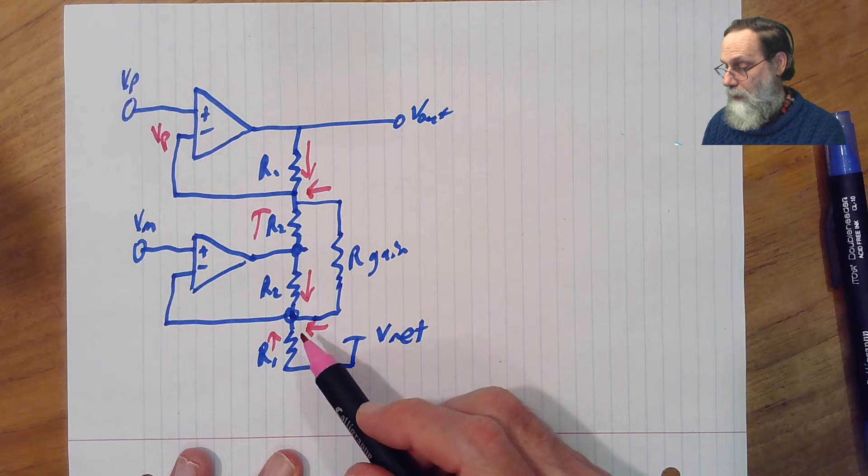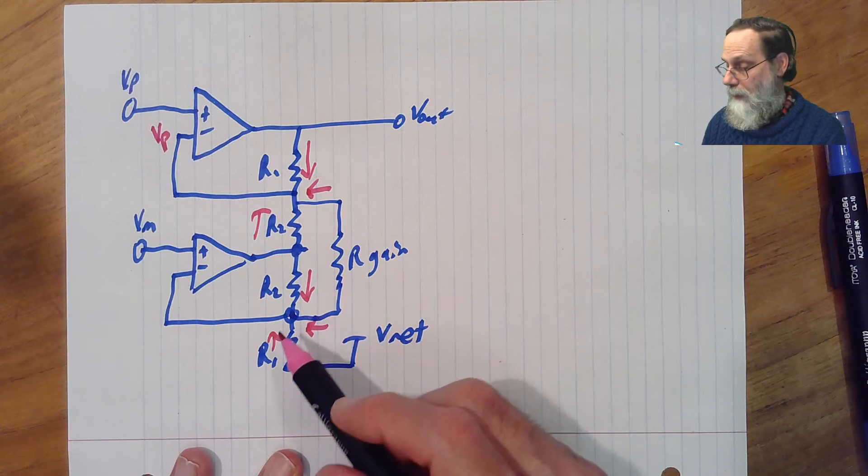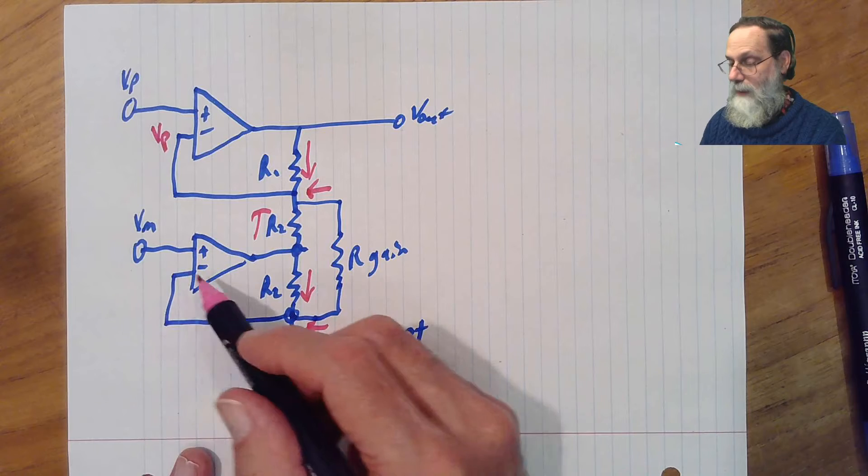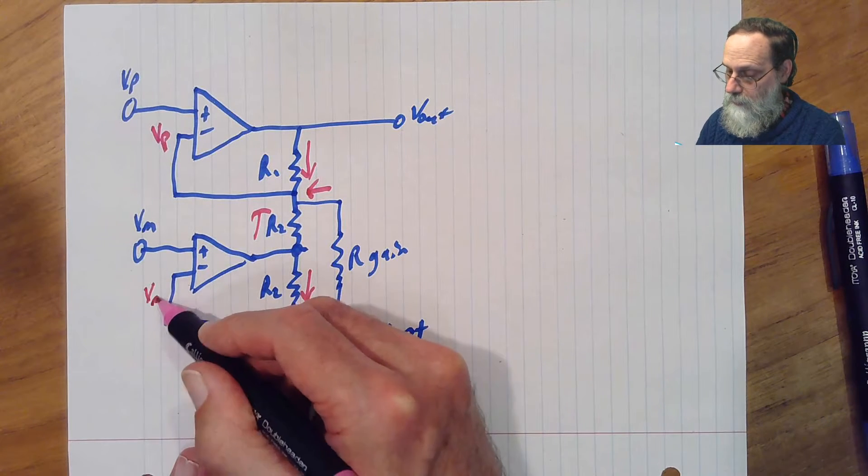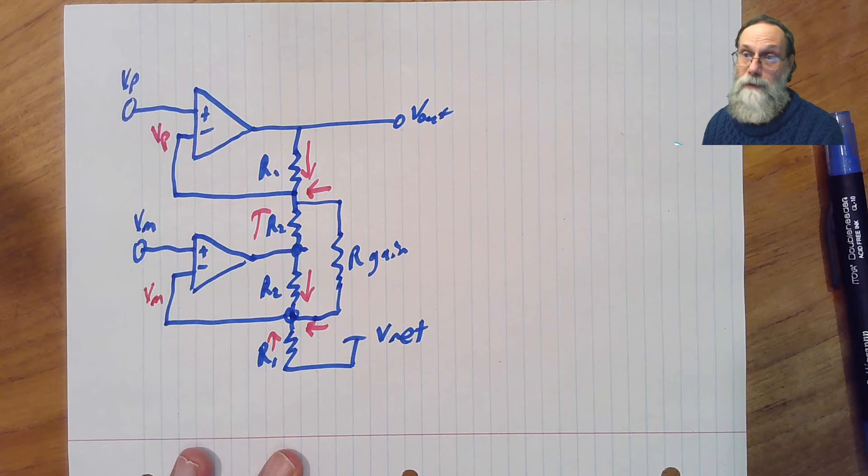And this node, same thing going on here. It's a negative input of feedback loop, so it's going to be pulled to the same value as the positive input to that op-amp.